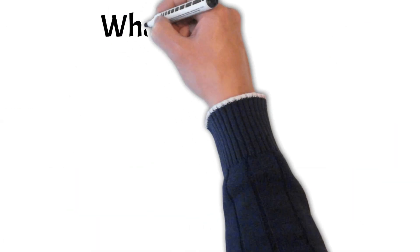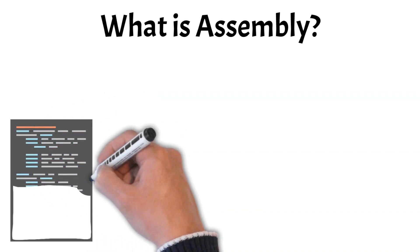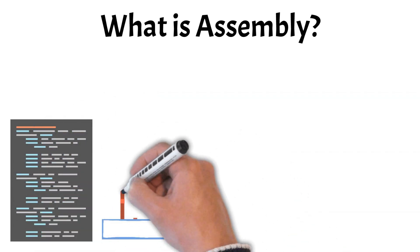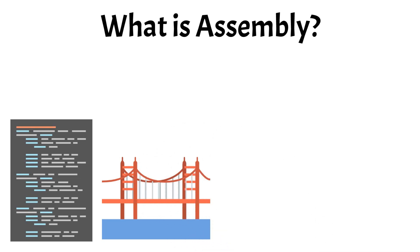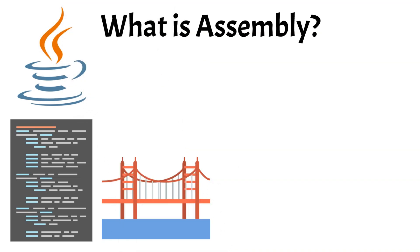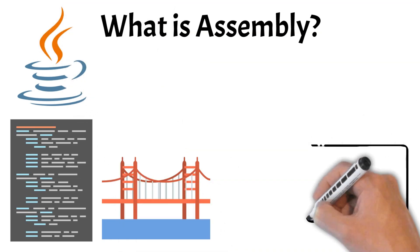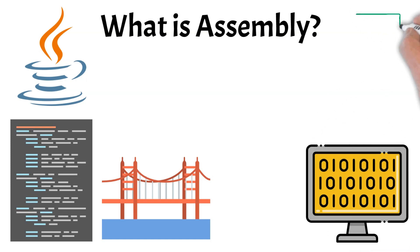First, let's take a look at what assembly is. Assembly language is a low-level programming language that acts as a crucial bridge between the code we write and the machine code that a computer's hardware understands. Unlike high-level languages like Python or Java, which are designed to be easier for humans to read and write, assembly language is much closer to the computer's hardware. This gives programmers direct control over the CPU and memory.